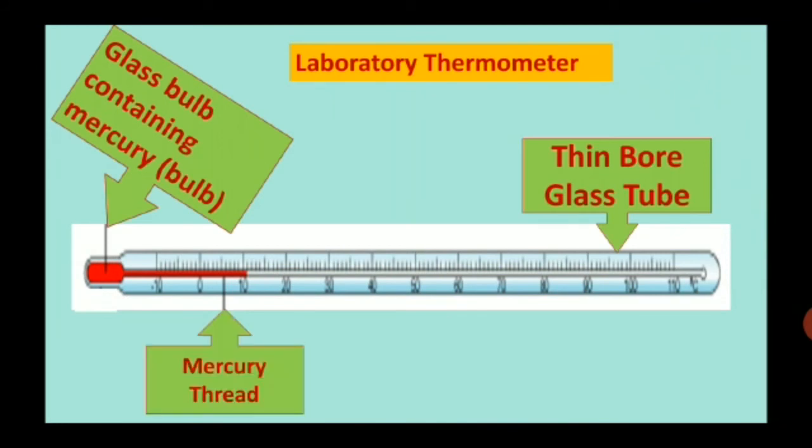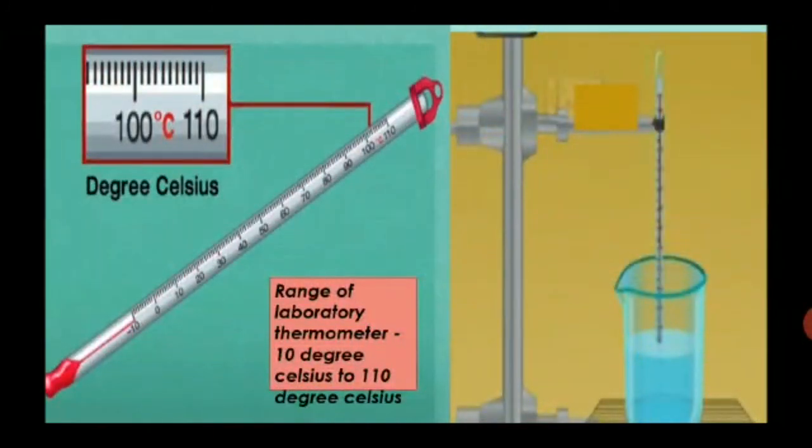Now children, let us discuss the structure of laboratory thermometer. It contains glass tube containing mercury, thin bore glass tube and glass bulb. There is a mercury thread also in laboratory thermometer.